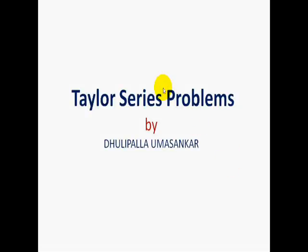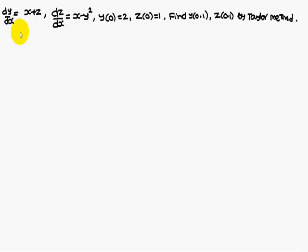Today, we are going to discuss a Taylor series problem. Here it is: dy/dx is x plus z, and dz/dx is x minus y squared. y(0) is equal to 2, z(0) is equal to 1. Find y(0.1) and z(0.1) by Taylor series method.